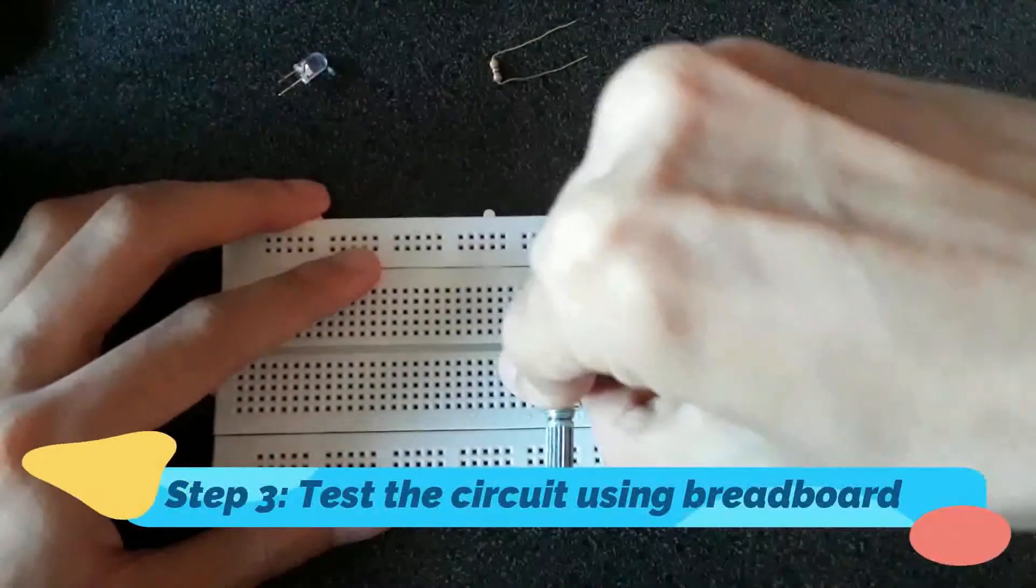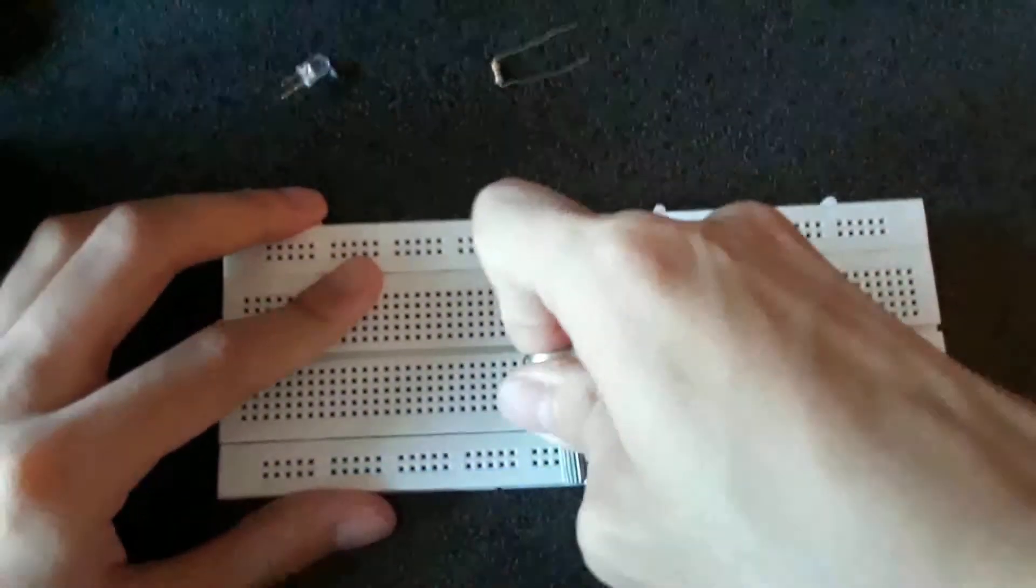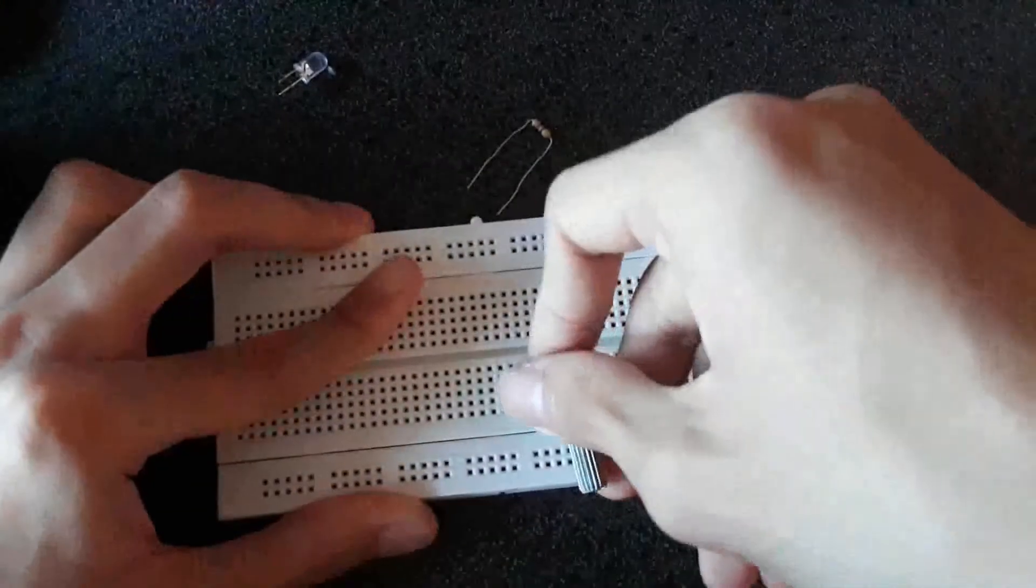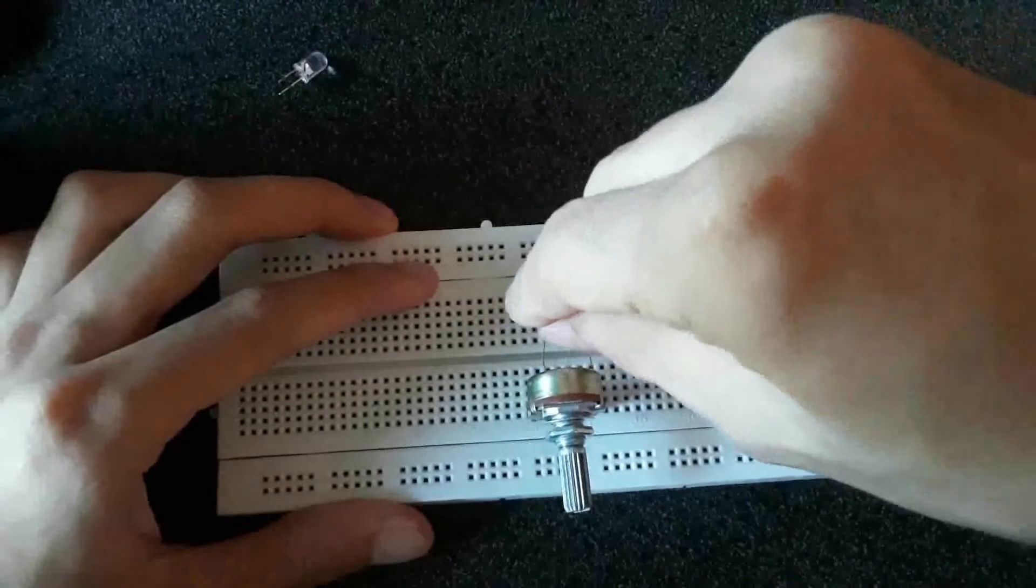Step 3: Now, it's time to make an actual circuit. For now, let's use a breadboard. Carefully mount each of the components onto the breadboard.